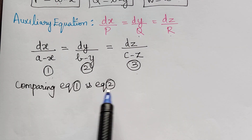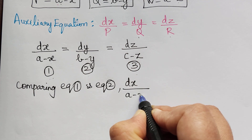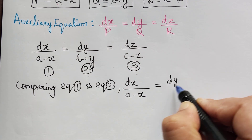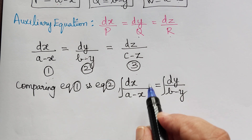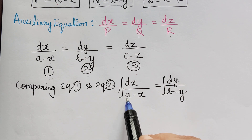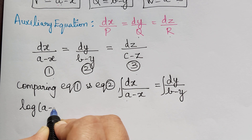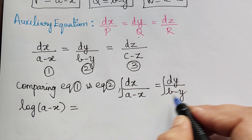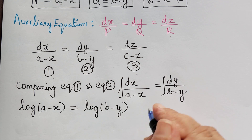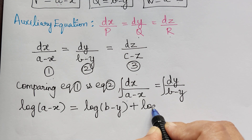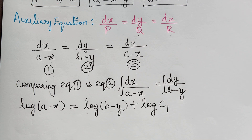Comparing equation 1 and 2, we get dx by A minus X is equal to dy by B minus Y. Now we have to integrate on both sides. The integral of 1 by A minus X dx is logarithm of A minus X, and that is equal to the integral of dy by B minus Y, which is log of B minus Y. Since we have logarithm, we add the constant as log of C1.